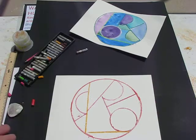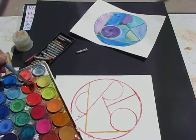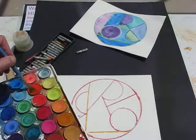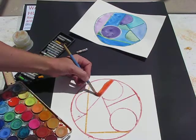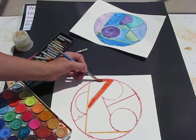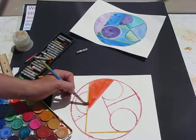I'm going to do each section with a different kind of hue. If you don't know what I mean by hue, the hue is another word for colour. In each section, I'm going to fill it in.